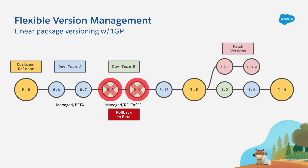Finally, if any fixes are needed after version 1.5 gets released, the partner can create patch versions. To be fair, this is a nice little bit of nonlinear versioning in the 1GP world, but it's really all there is, and it's not that much.